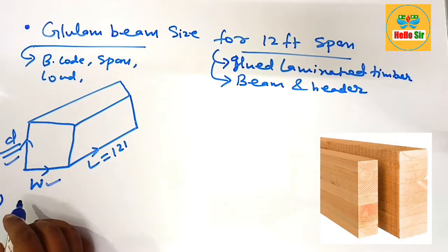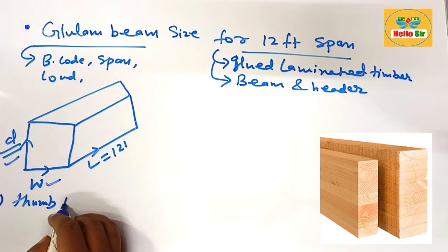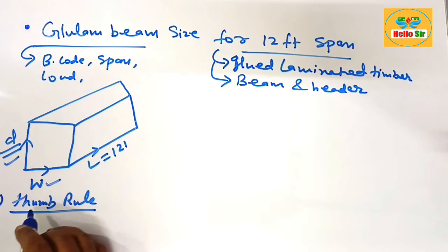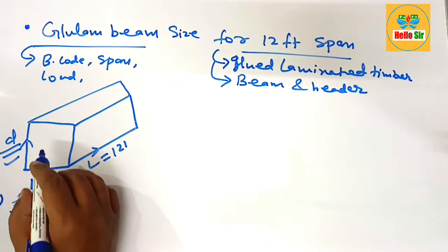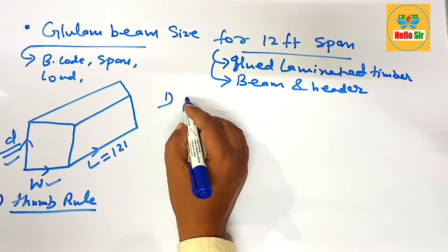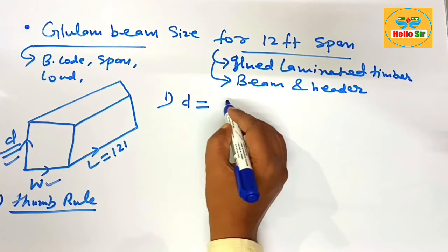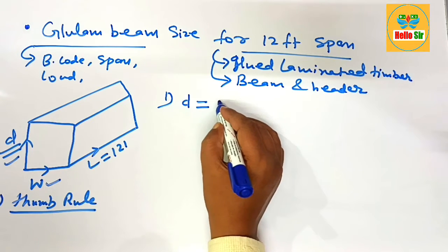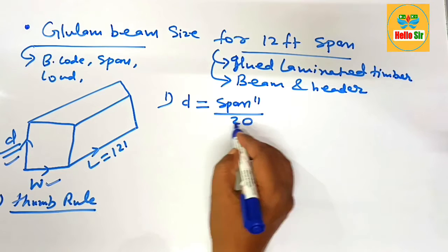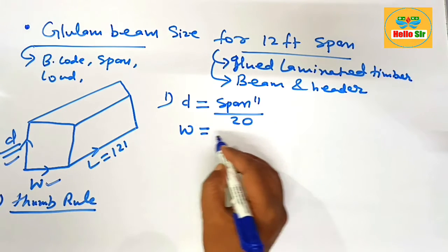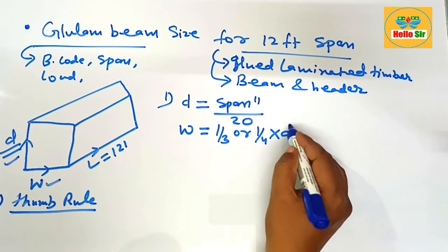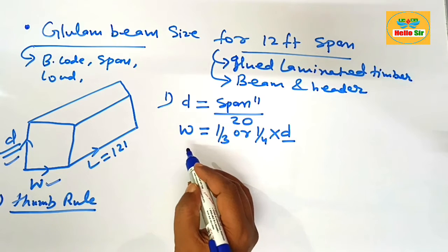In this video, we find the beam size according to the thumb rule. For sizing a glulam beam, you need to find the depth and width. The depth of the glulam beam as per the thumb rule should be the span in inches divided by 20. The width of the beam section should be one-third or one-fourth of the depth section.